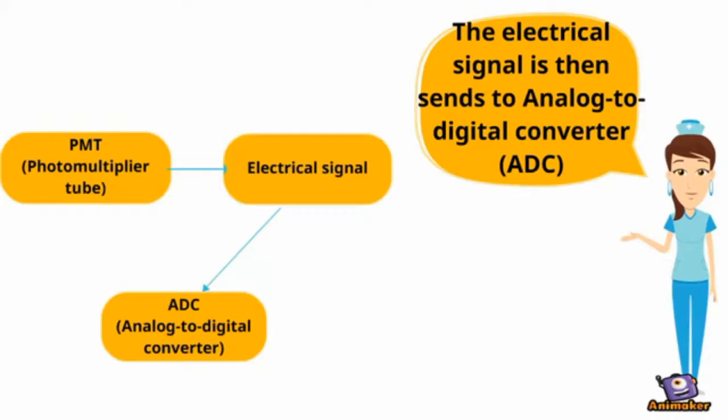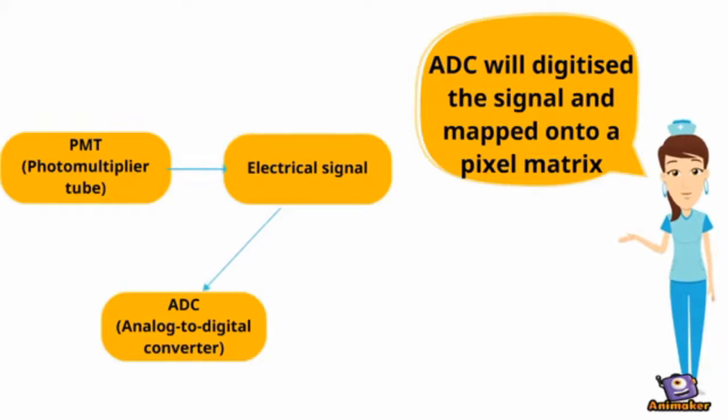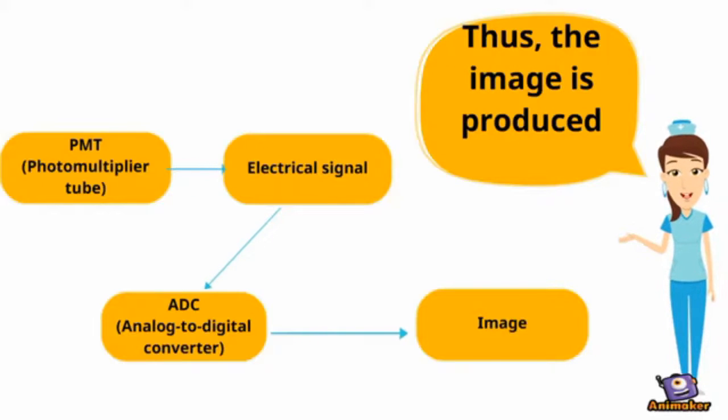The electrical signal is then sent to analog to digital converter. The ADC will digitize the signal and map it onto a pixel matrix. Thus the image is produced.